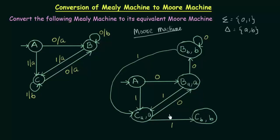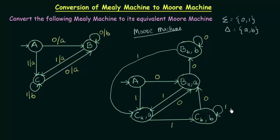Now coming to state CB. Using state C from the Mealy machine: on input 0, C goes to state B giving output A — the state B with output A is BA — so CB goes to BA on input 0. On input 1, C stays in C itself giving output B, and the state C with output B is CB itself, so on input 1 CB goes to itself.